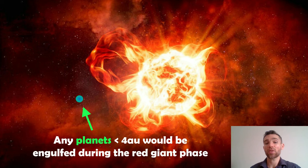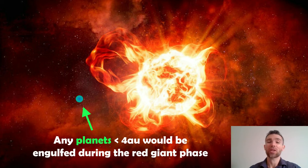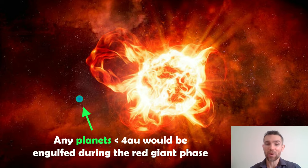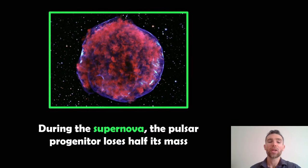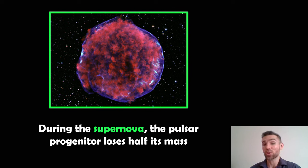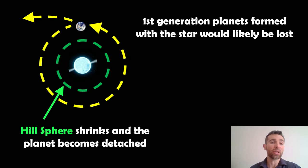Even if we did have planets around one of these massive stars, any planet closer than four AU to the star during the red giant phase would be engulfed. One AU is one astronomical unit — the average Earth-Sun distance — so within four times that distance, planets would be engulfed and destroyed when the star swells up into the red giant phase. Additionally, during the supernova, the star loses about half of its mass, which is ejected into the supernova remnant — the nebula we see around the pulsar or neutron star.